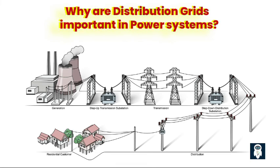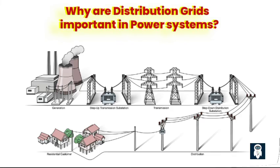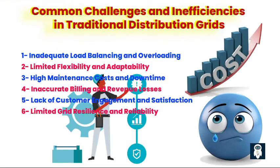Why are distribution grids important in power systems? Distribution grids act as the intermediary between the high-voltage transmission system and individual consumers, managing the flow of electricity and maintaining voltage levels within safe limits. They are essential for distributing power efficiently and effectively to meet the varying demands of customers. However, traditional grids face several common challenges and inefficiencies.